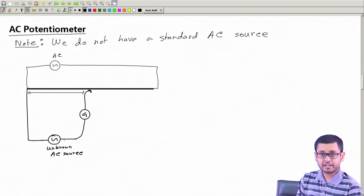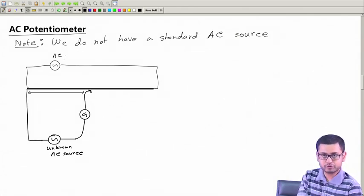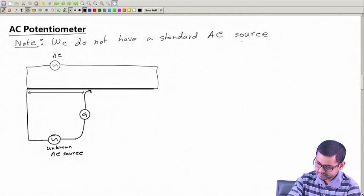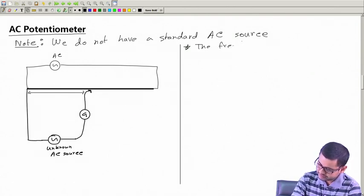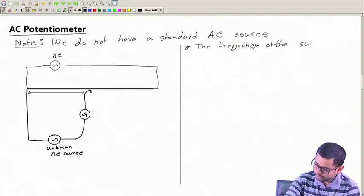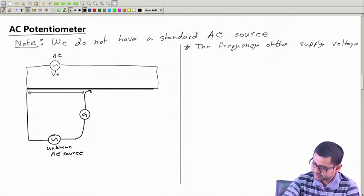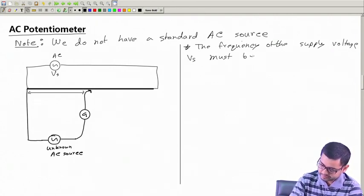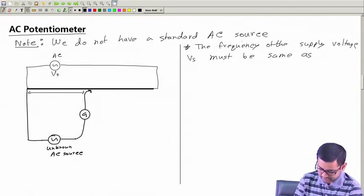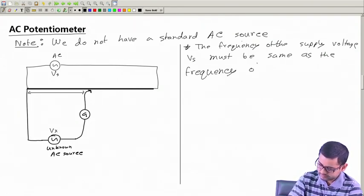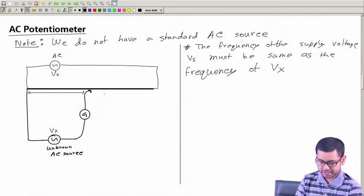Another important requirement: the frequency of this AC supply voltage V_s must be the same as the frequency of the unknown voltage V_x, otherwise we will never get a balance.